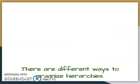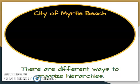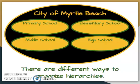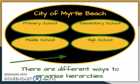There are different ways to organize hierarchies. Another way is with circles. This one also says the city of Myrtle Beach, so everybody that lives there fits inside this circle. If we want to get more specific, we can classify everyone by what school they go to — primary, elementary, middle, and high school — and whatever school you go to, you would go in that circle. In this area with no circle, that might be where your parents or neighbors go, since they don't fit in those school circles because they don't go to school anymore, but they still live in the city of Myrtle Beach.